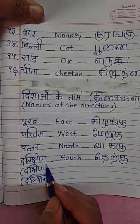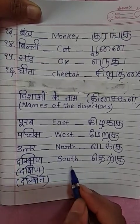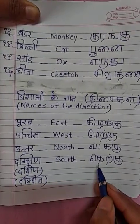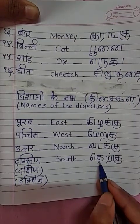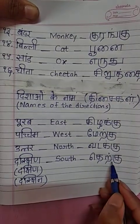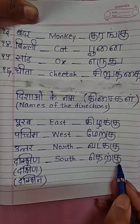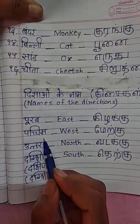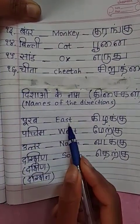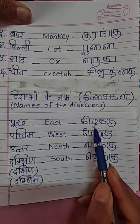Dakshin is south, in Tamil it is Tekku. So to summarize: Purab — east, Paschim — west, Uttar — north, Dakshin — south.